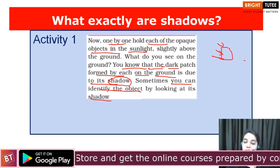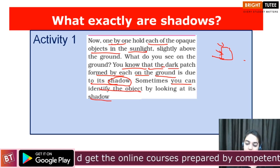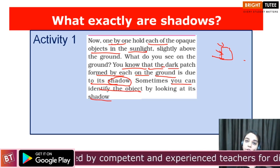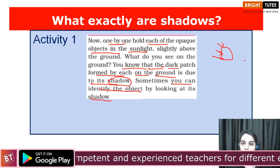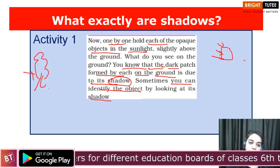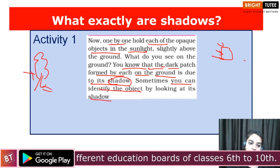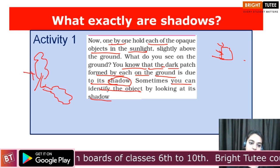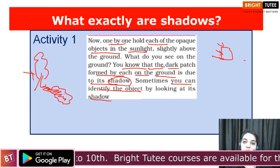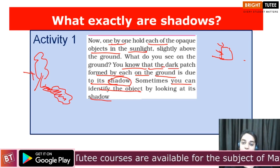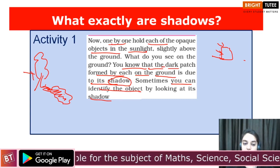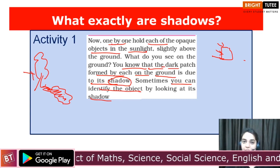But in some cases this can be misleading and we can obtain shapes which are not even close to the object. For example, for that of the tree, when we observe its shadow we will be able to recognize it. But sometimes the shadows can be misleading, which we are going to study with the help of another activity.